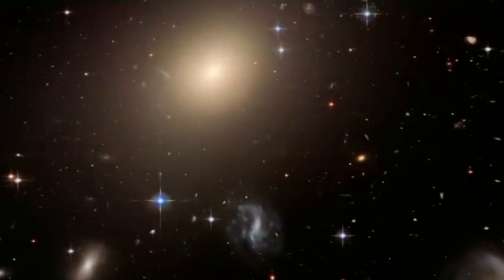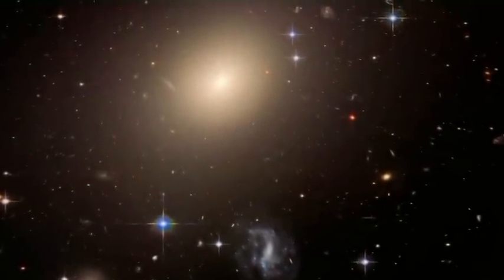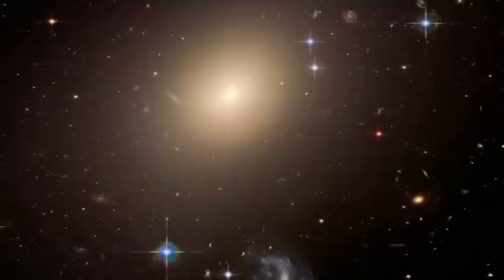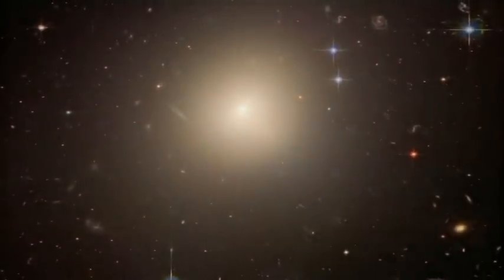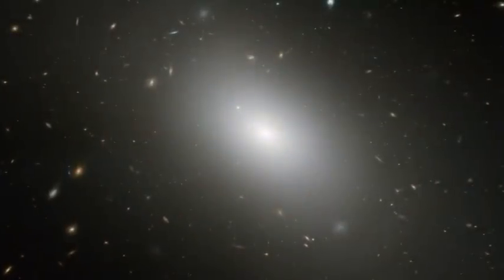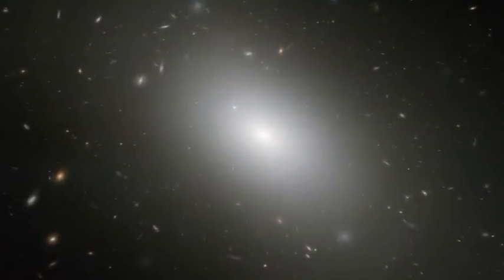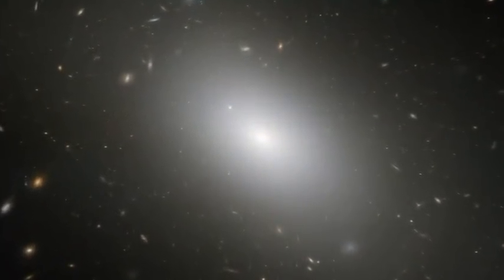A different type of galaxy is the elliptical. Such galaxies generally contain old stars with very little gas, and so they resemble the nuclei of spiral galaxies.